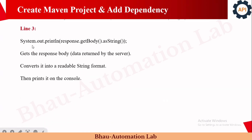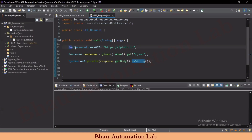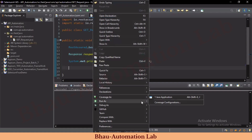Line three — System.out.println(response.getBody().asString()) — prints the response. getBody() retrieves the response body data returned by the server once we hit the request. asString() converts it to a readable string format so we can read it and it prints on the console. That's the complete basic GET request we have prepared. Let's run it and see whether we get the output.